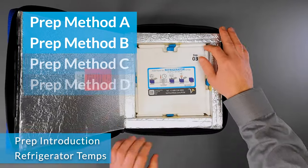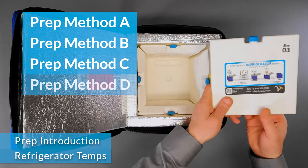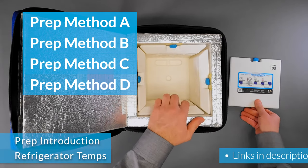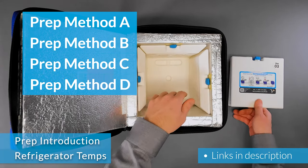There are four ways to prepare the PCM panels of the CoolCube at refrigerator temps. Find links to each method in the description below.